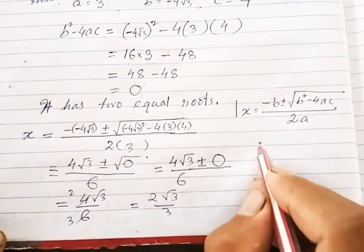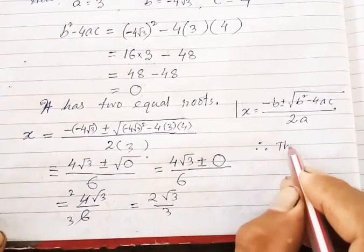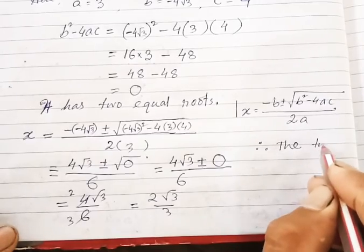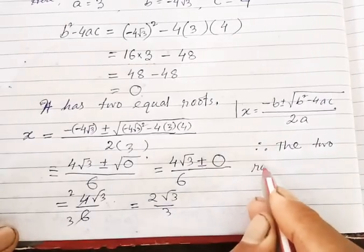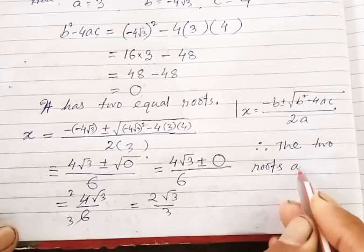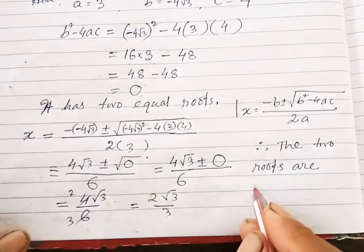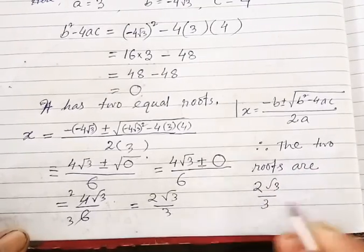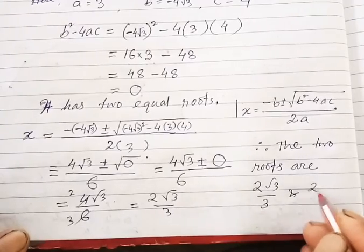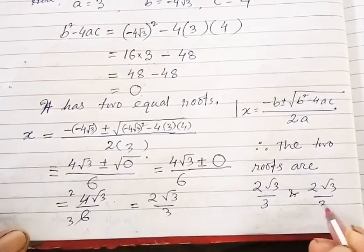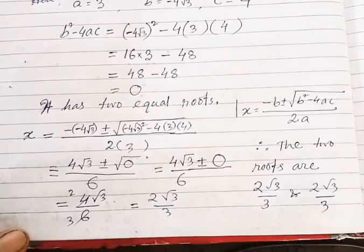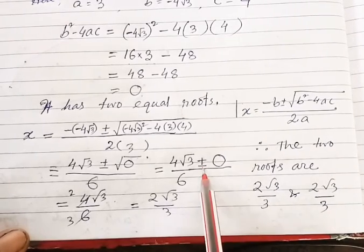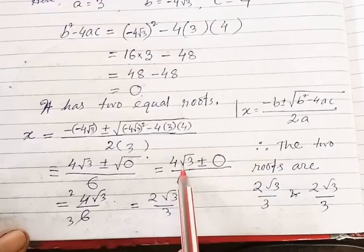Therefore the two roots are 2√3/3 and 2√3/3 — two equal roots. One is in the case of plus and the other in the case of minus, but since we added and subtracted zero, both give the same value.